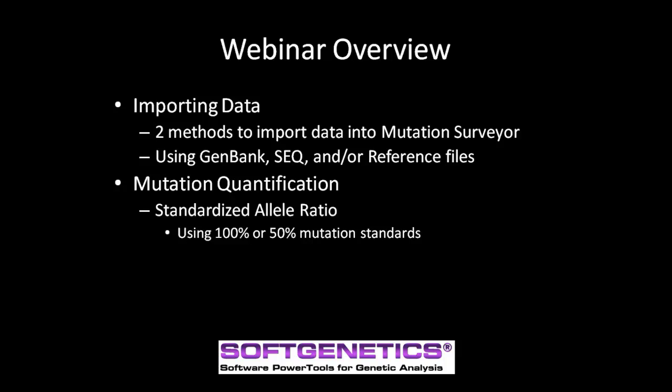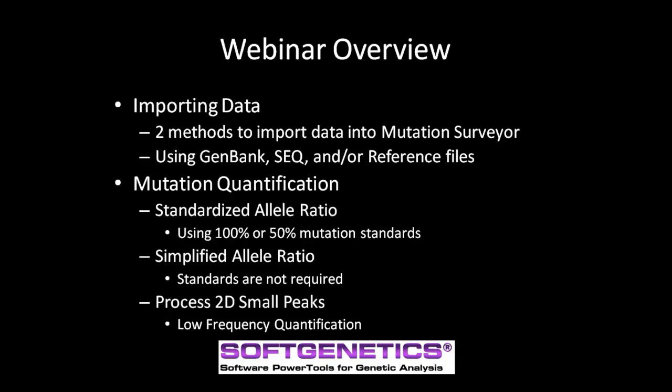There are two different options of quantification that you can select from. The first is by using a reference to quantify the mutation, also known as standardized allele ratio. The second method does not require a reference and is calculated directly from the sample. Mutation Surveyor uses GenBank, SCQ, and reference files to distinguish normal allele from a variation and compares the peak intensity for both. The last topic we will touch upon is the Quantification of Low Frequency Variants using the Process 2D Small Peaks option in the Quantification dialog box.